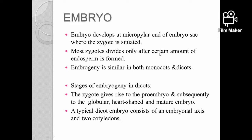The zygote, which is part of the embryo, requires a certain amount of endosperm formation for development. Embryogeny is similar in both monocots and dicots, but only in the early initiation stages. In the later stages, growth is different.